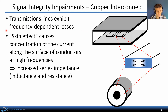First, let's consider the skin effect. This causes a concentration of current along the surface of conductors at very high frequencies. Since the currents are now flowing through a reduced cross-sectional area, this increases the series impedance — the inductance and resistance — of the conductor.